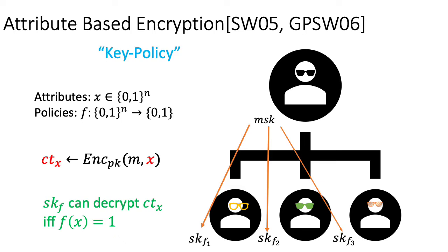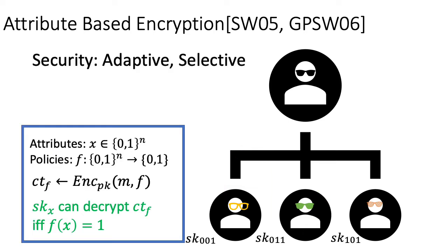There is also a dual formulation called key-policy attribute-based encryption that embeds the policy into the secret key and the attribute into the ciphertext. Both of these have constructions with a lot of applications. For both formulations, we also have two levels of semantic security requirements called adaptive security and selective security.